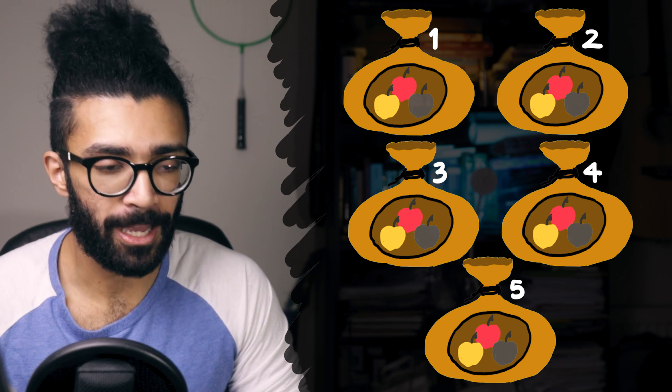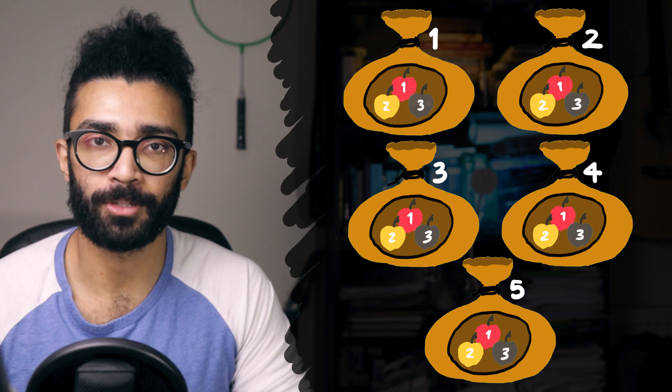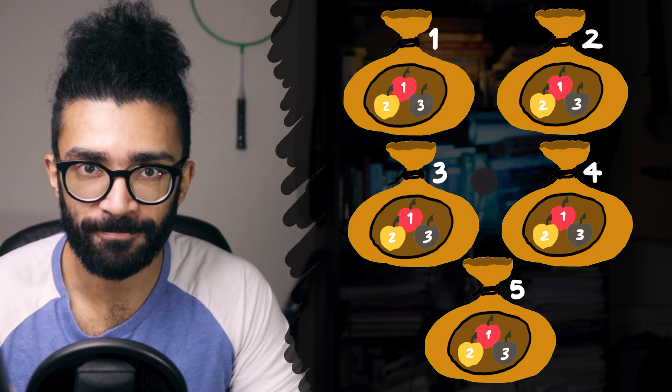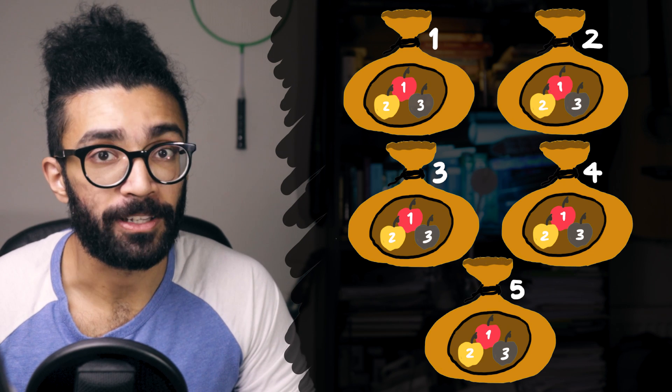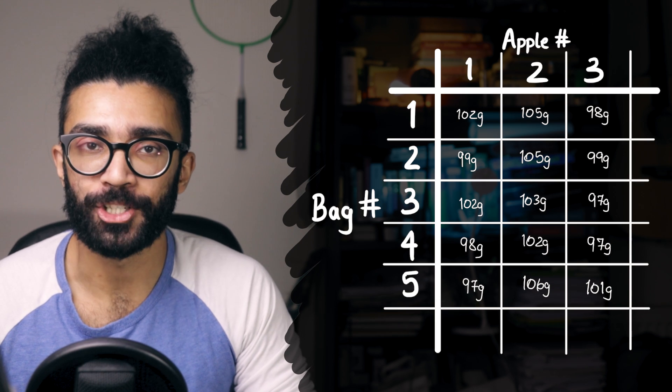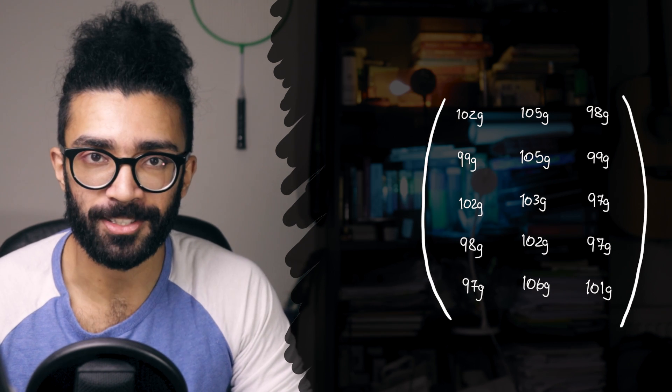And within each bag, we label the apples as well. All the red apples are called apple number one, the yellows are apple number two, and the greens are apple number three. We then find the masses of each of those apples. Here's a table showing those masses. We can actually represent all of this information in a matrix. This is what that looks like.